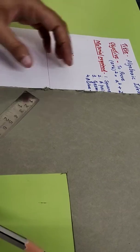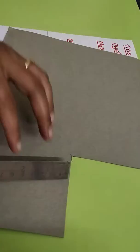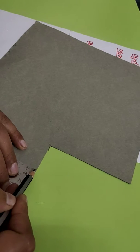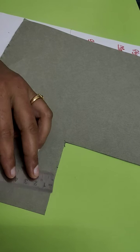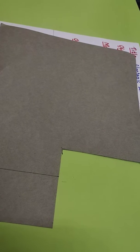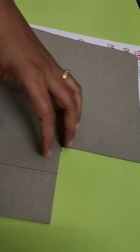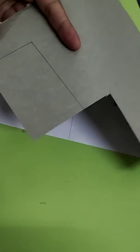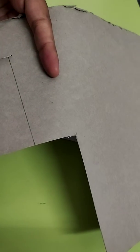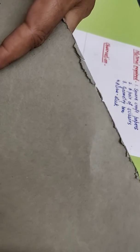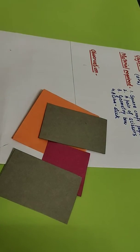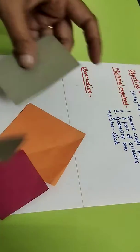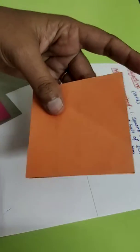Now lastly we are going to cut 2 rectangular pieces of breadth 5 and length as 8cm. So now you can see these 4 pieces are ready.